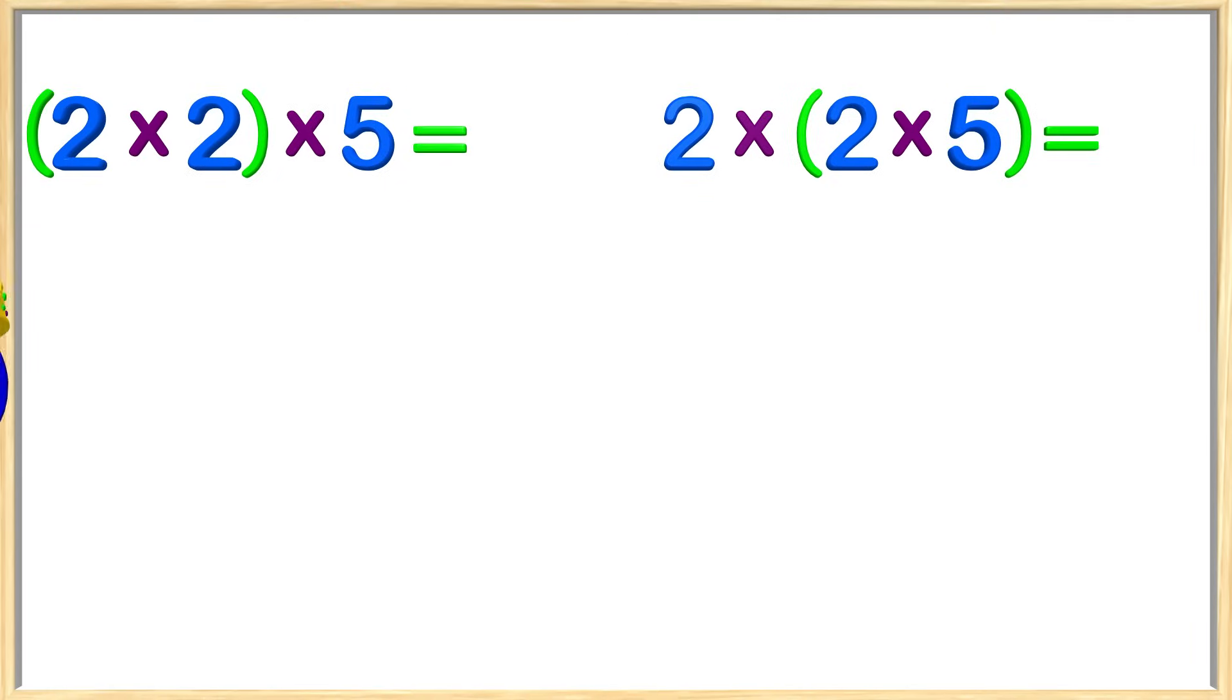Let's look at another problem and see what we can do. This time our friend King Parentheses is helping us group the numbers by putting parentheses around two of the numbers. We can see that we have the same problem on both sides of the board, but with the parentheses grouping different sets of numbers. We learned before that both of these problems should come out to be the same answer or product.